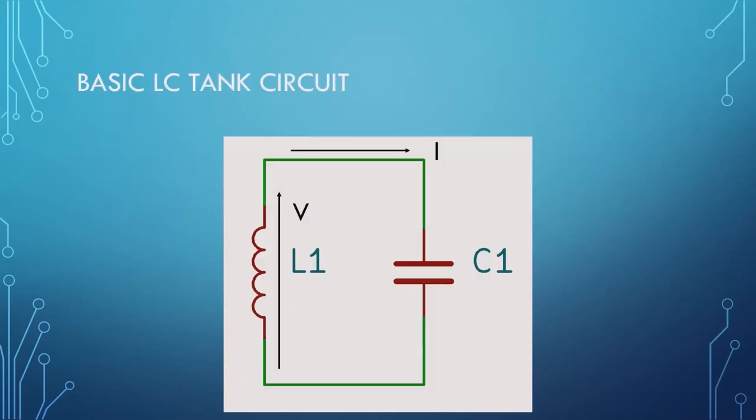The very first oscillator that came out was an LC tank circuit. Based on the values of the inductor and the capacitor, they found out that they could actually generate a signal at a specific frequency. The problem was that over time, that signal would diminish and you would lose it.